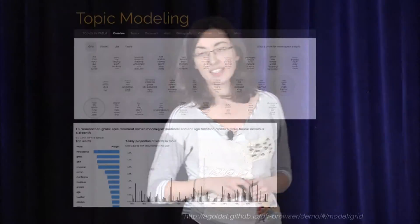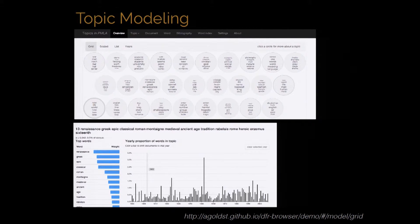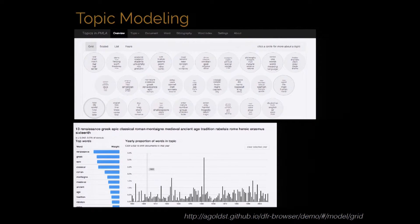Another really cool technique that we see a lot of use of today is called topic modeling. Topic modeling is a great way to say: looking at all the text you have, what are words that appear together that are likely logically related to each other? It works by you saying 'I think I have ten topics—can you break down the words and give me some clusters?' This is an example of looking at all of JSTOR's articles.